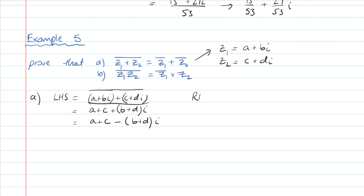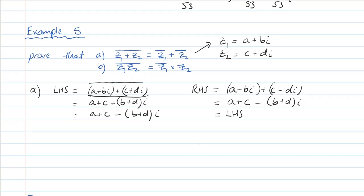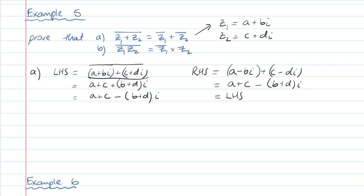The right-hand side is equal to the conjugates of the two separately added together: a minus bi plus c minus di, and that's equal to a plus c minus b plus d i. You can see that this is equal to the left-hand side, so there's our proof. I'll leave the second part for you to have a play with, and we'll cover it in class if need be.